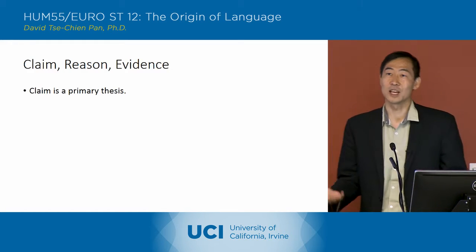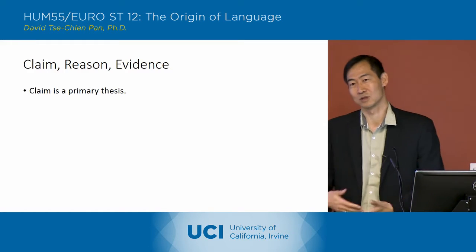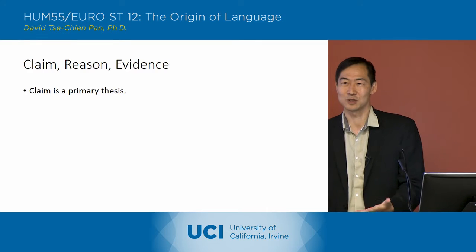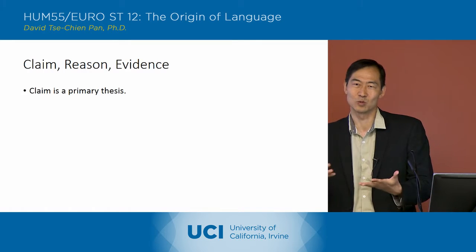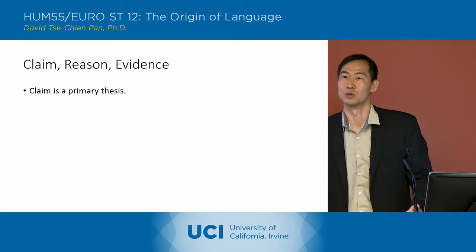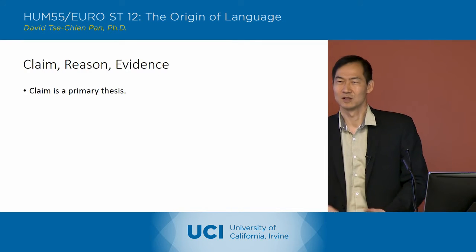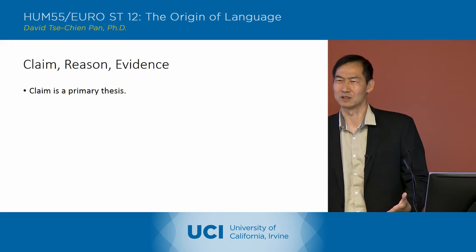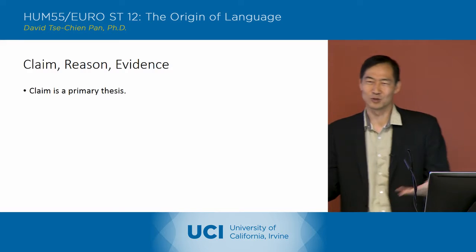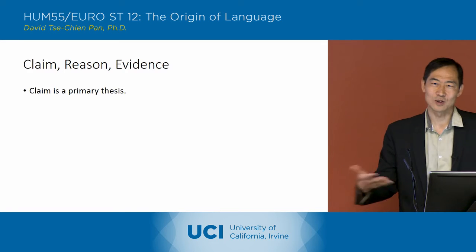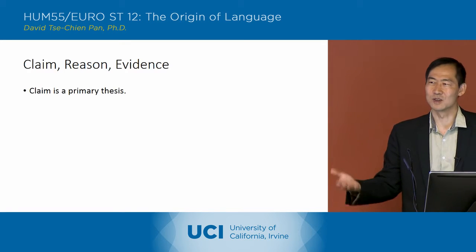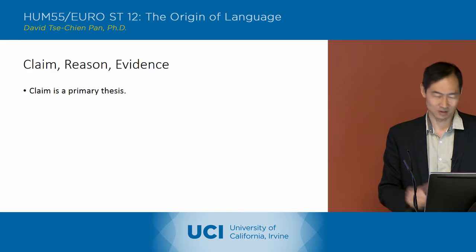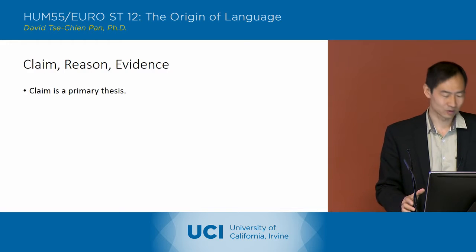So the claim is a primary thesis — it's the one that you're trying to prove. That's pretty basic. You've read an essay, you have a thesis, and that's basically the main argument you're trying to make.